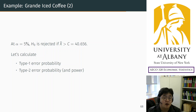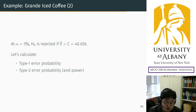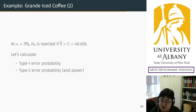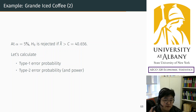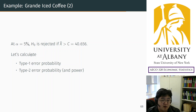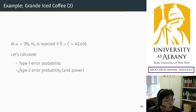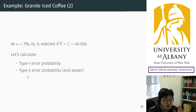This is new because we are applying the Type 1 and Type 2 error probability ideas to a one-tailed test. There is no difference — the framework is the same. Remember, Type 1 error happens when you reject the true belief, but Type 2 error is when you fail to reject a wrong belief. Keep that in mind and let's calculate the probability.